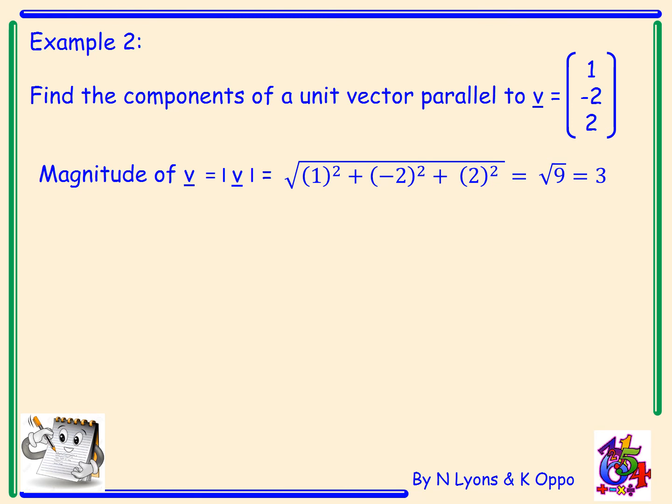Now I want to find the components of a unit vector parallel to V. So a unit vector parallel to V is simply a vector that's a third of the vector V. So I've got a third of 1, minus 2, 2. And I take a third of each of the components. That gives me the components 1 third, negative 2 thirds, and 2 thirds. So that's the components of a unit vector parallel to V.